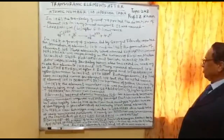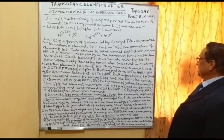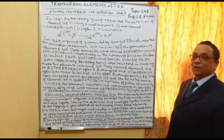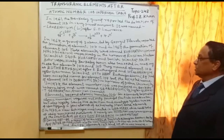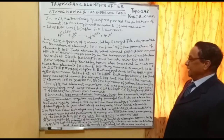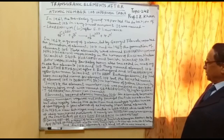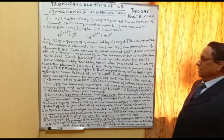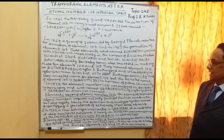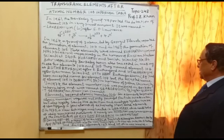For element 105, the Berkeley team proposed the name Hahnium, after the German scientist Otto Hahn who contributed to nuclear science. However, the accepted name for element 104 is Rutherfordium (Rf), and the accepted name for element 105 is Dubnium (Db), in honor of Dubna University.